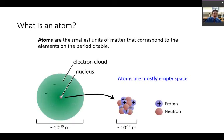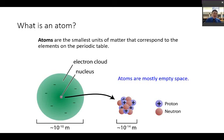An atom consists of three main parts: protons, neutrons, and electrons. The neutrons and protons are held in what we call the nucleus of the atom. The electrons are outside of the nucleus in what we call the electron cloud. What's really amazing is that atoms are mostly empty space — there is an order of 10,000 magnitude difference between the size of the nucleus and the size of the atom.